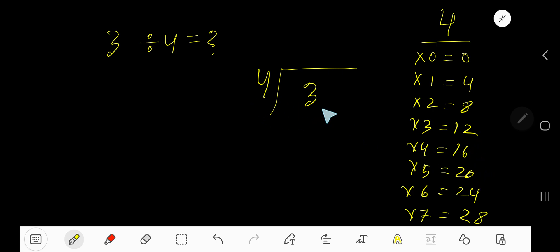4 goes into 3 how many times? As 3 is less than 4, 0 times. 0 times 4 is 0. Subtract to get 3.